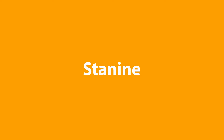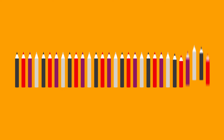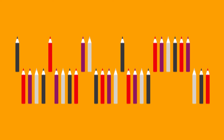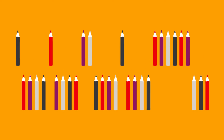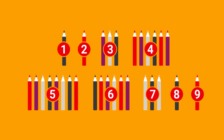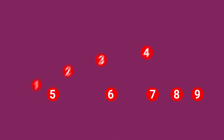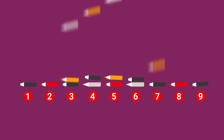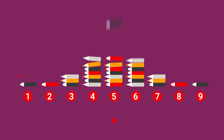A STA9, short for Standard 9, is a way of grouping learners into nine different groups according to their standardized scores. We use STA9s to understand a learner's and a cohort's broader performance.